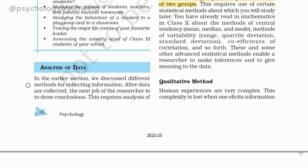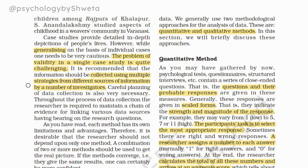We have discussed what data is and how different types of data or information are collected for different types of methods. Now we have to draw a conclusion, which is the meaning of the result. In this video, there are two types of methods, which are called quantitative and qualitative methods.